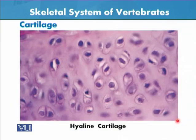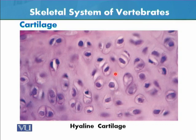This is the slide of cartilage. These are spaces which are called lacunae, and these darkly stained cells are called chondrocytes.